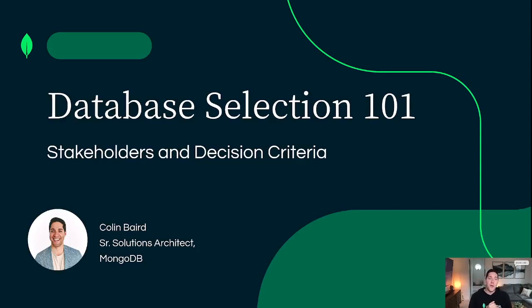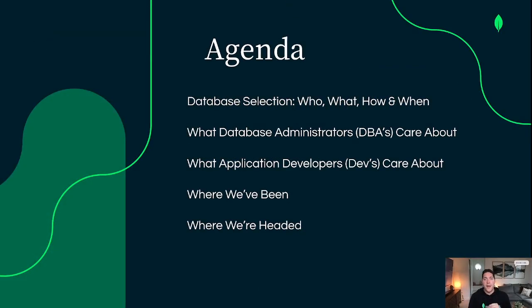Welcome to Database Selection 101: Stakeholders and Decision Criteria. My name is Colin and I'm a solution architect here at MongoDB. In this video we are going to be talking about database selection, who is involved in that process, what the process entails, as well as focusing on some of the key stakeholders involved in the decision criteria, namely database administrators and application developers.